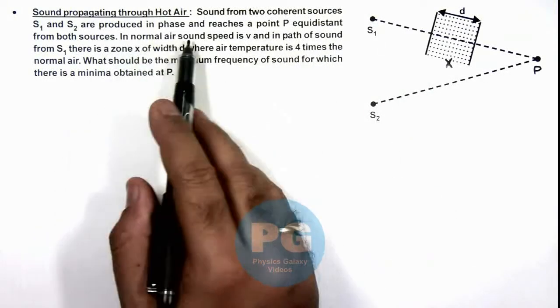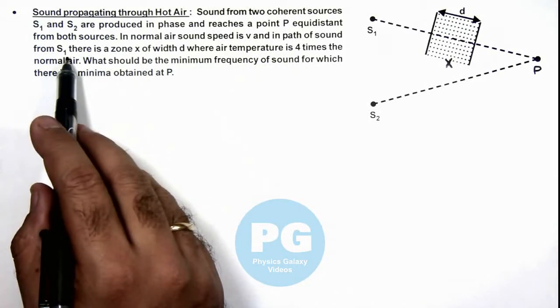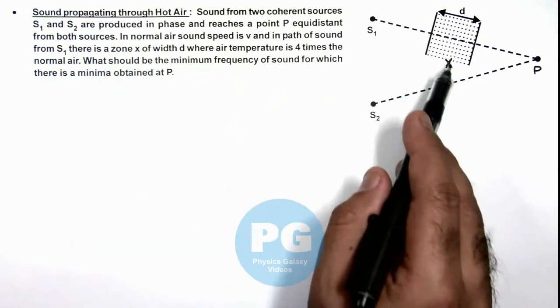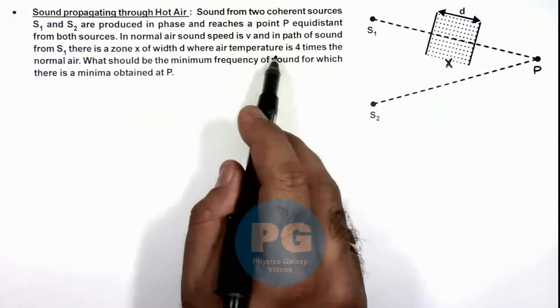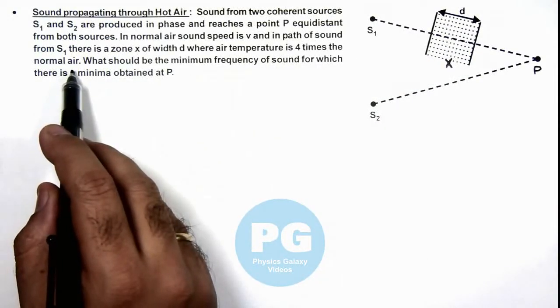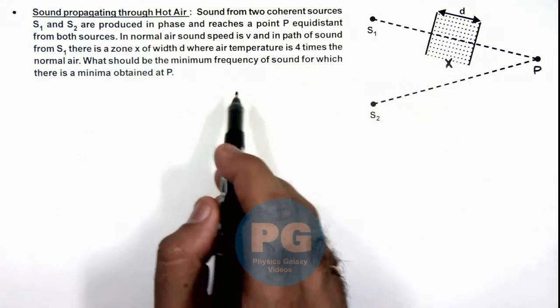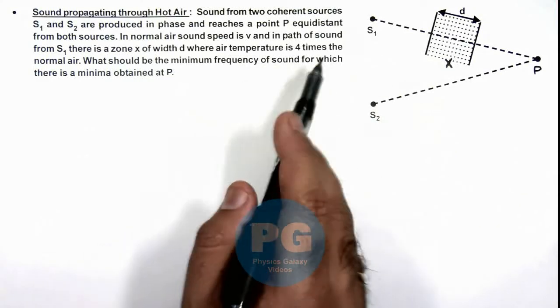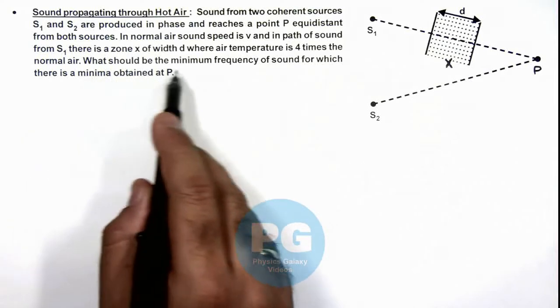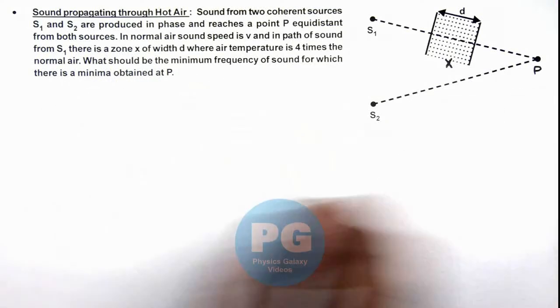In normal air sound speed is v, and in the path of sound from S₁ there is a zone of width d where air temperature is 4 times the normal air. That means the sound velocity will be doubled, as we know that sound velocity is proportional to square root of temperature. It is asking what should be the minimum frequency of sound for which there is a minima obtained at point P.